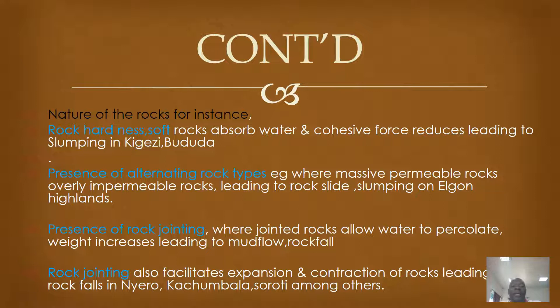Factor 3 is about the nature of rocks. For instance, the rock hardness and softness: soft rocks absorb water and the cohesive force between the rocks reduces. As a result, materials begin to slide downslope in the form of mudflows, in the form of slumping, in the form of rock slide, in Bugisu Highlands and parts of Bududa, along Mount Elgon.